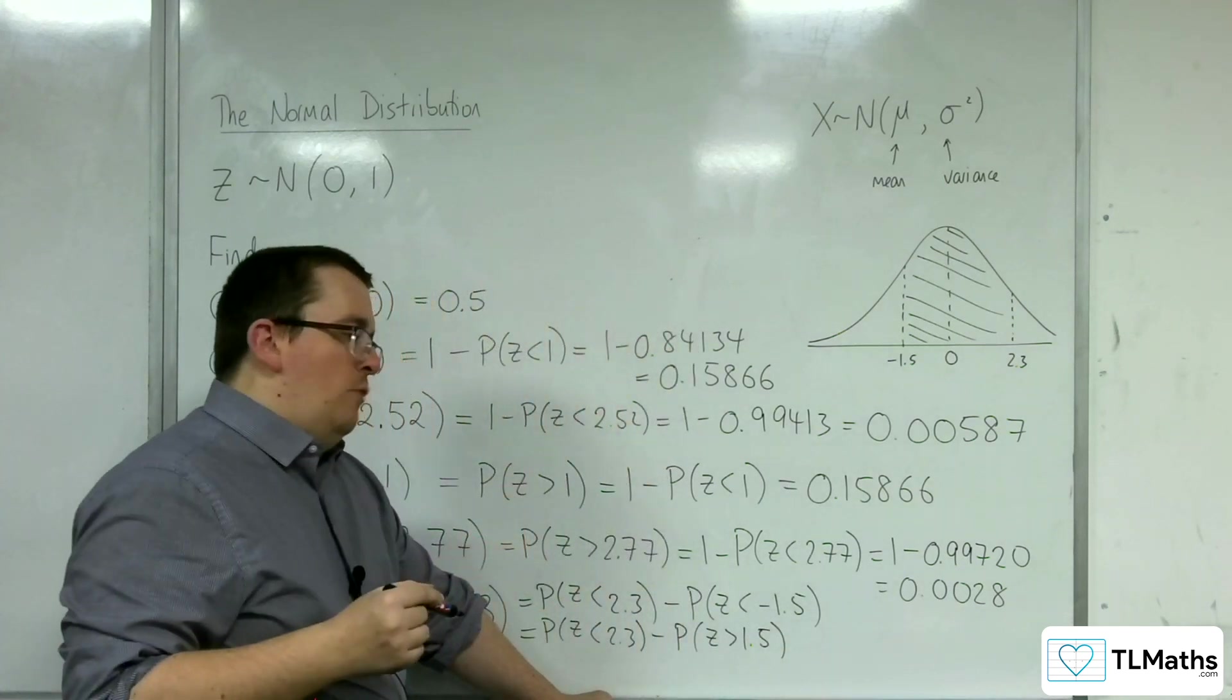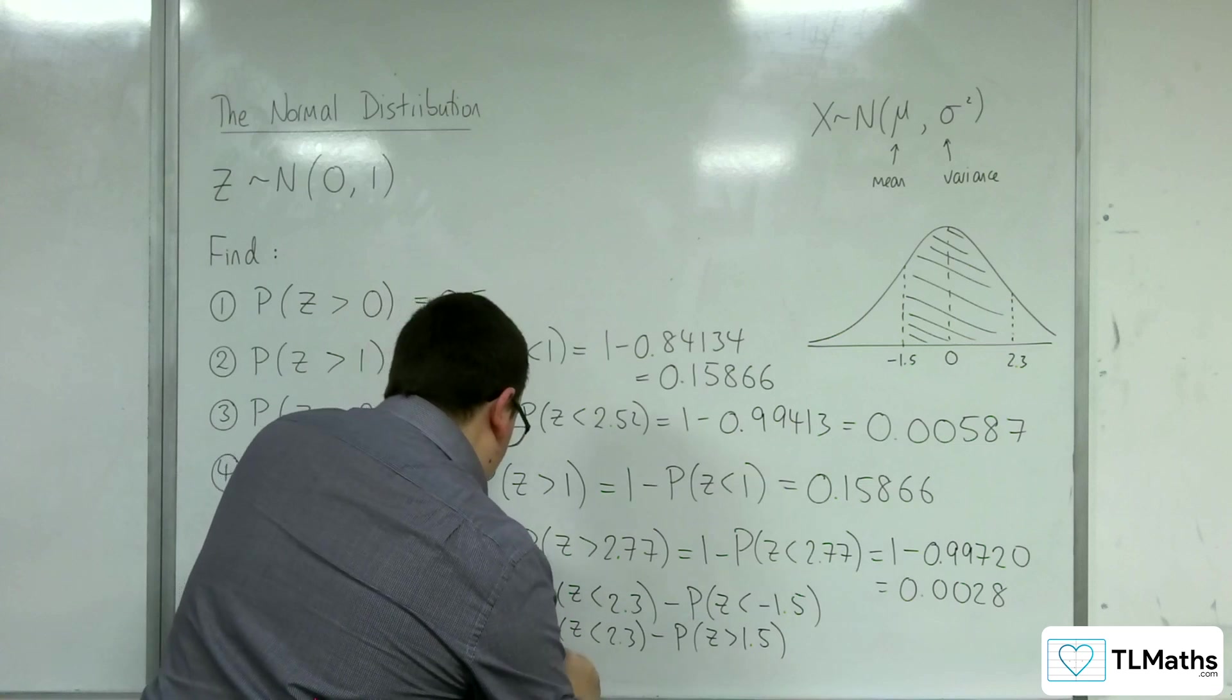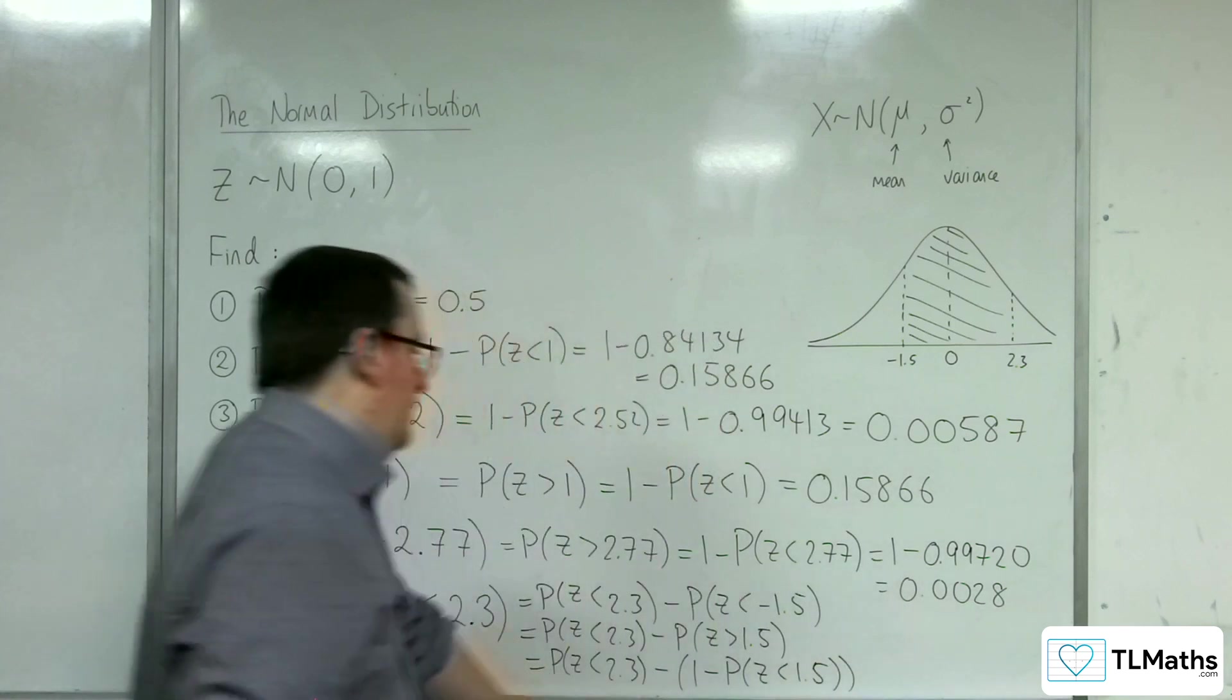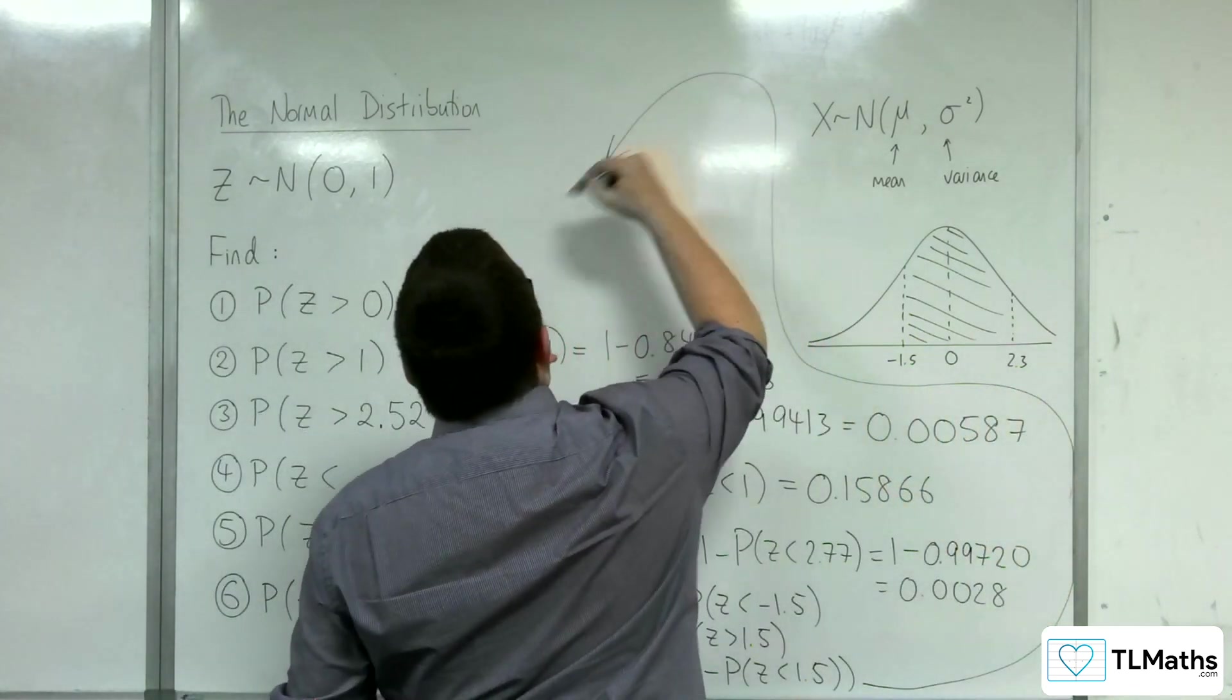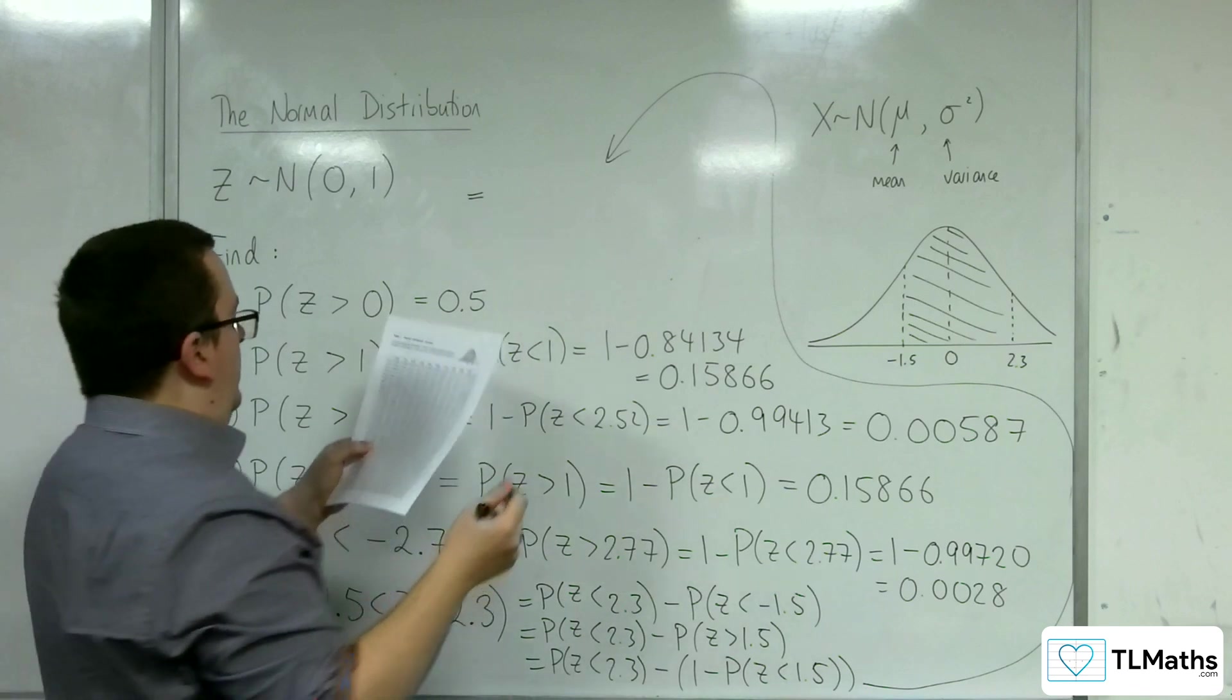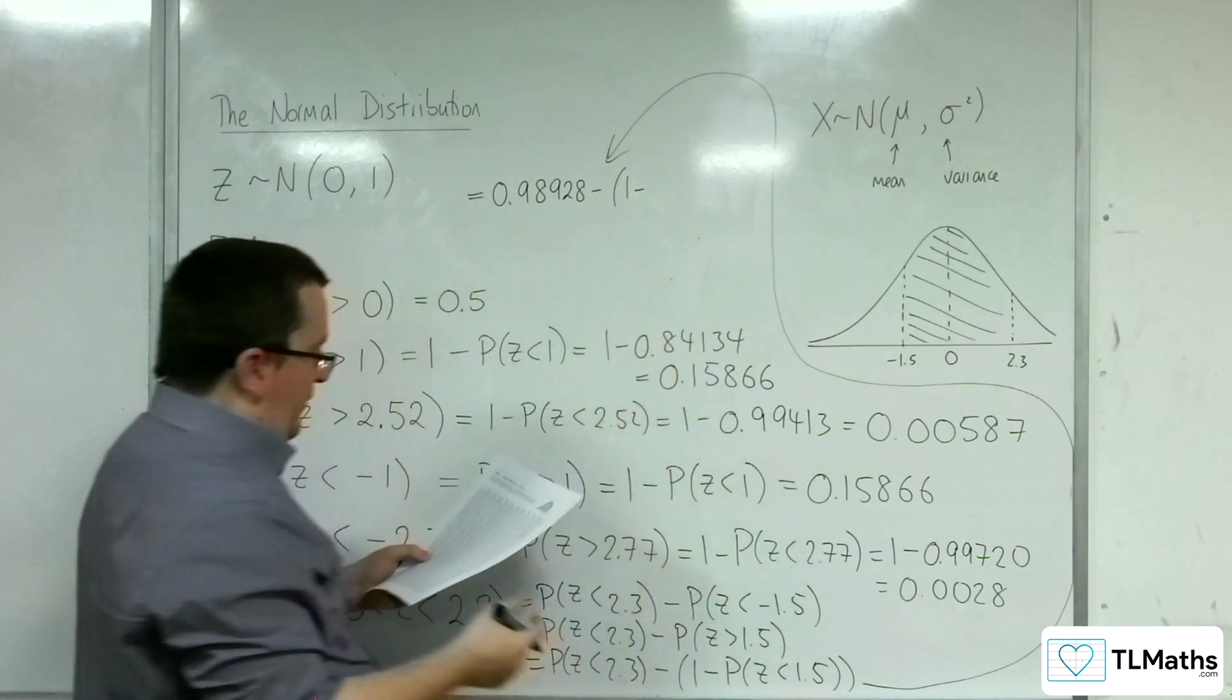So this one I can easily look up in my calculator. This one, I've got to remember that actually finding less than minus 1.5 is the same as the probability of Z being greater than 1.5. And the way to calculate greater than 1.5 is to then do 1 take away the probability of Z being less than 1.5.